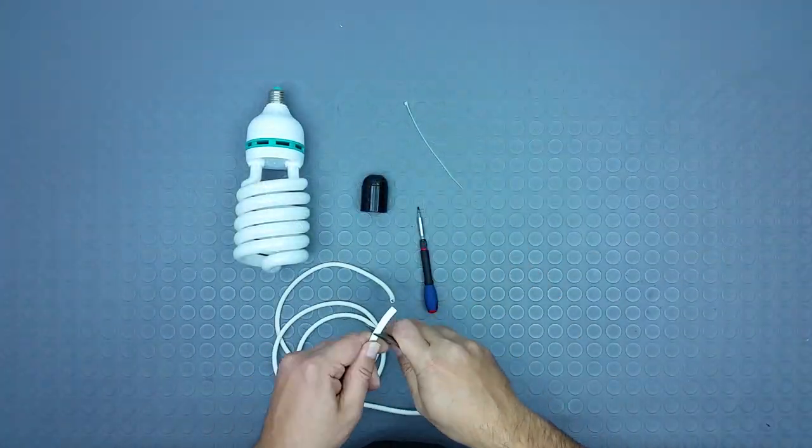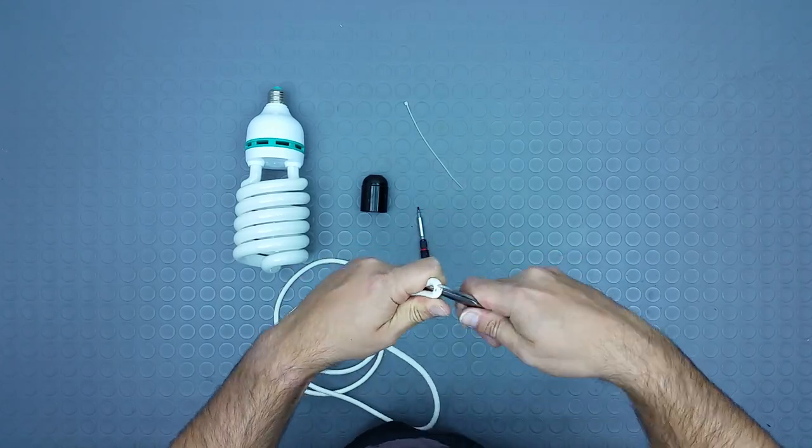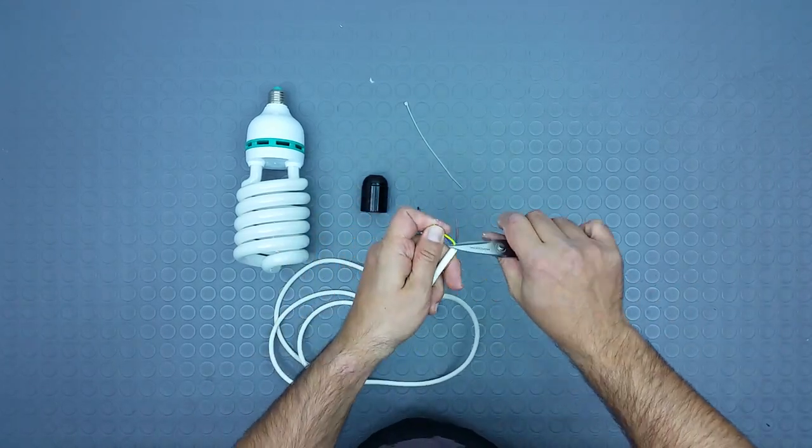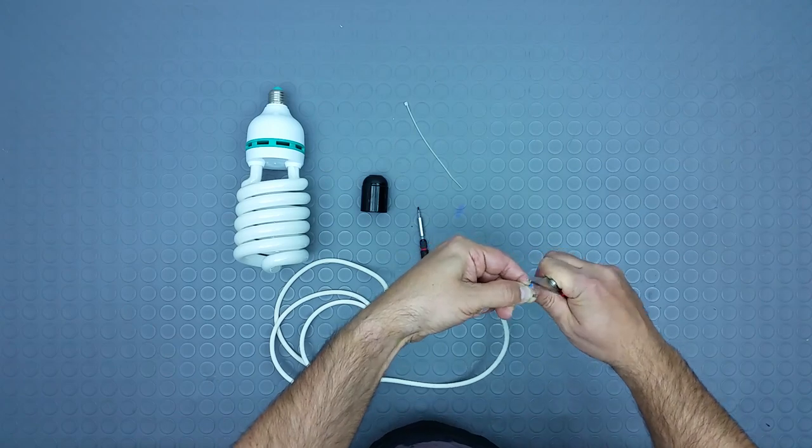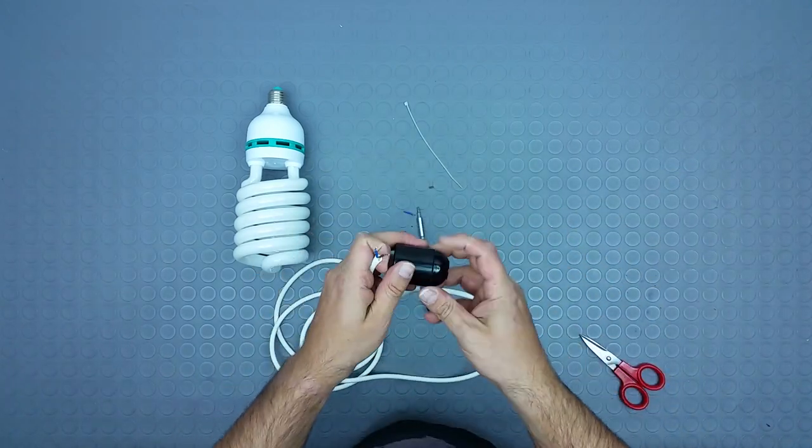The electrical connection is very simple. All you have to do is connect the cable to the bulb holder. To do this, you need to join the two poles to the internal connector. Close the bulb holder and screw the bulb.